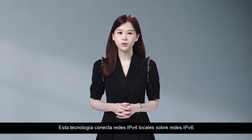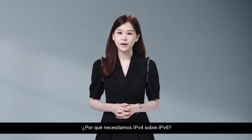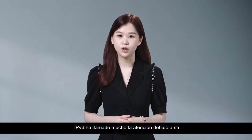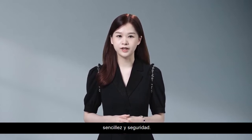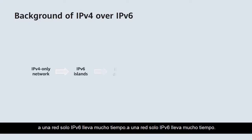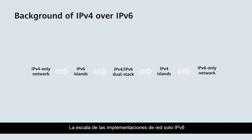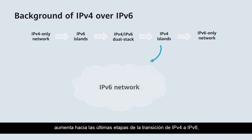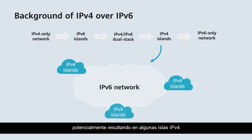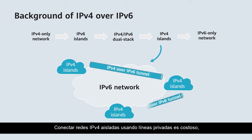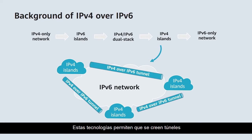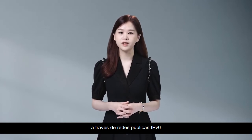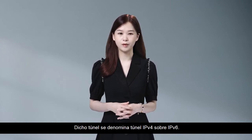This technology connects local IPv4 networks over IPv6 networks. Why do we need IPv4 over IPv6? IPv6 has attracted wide attention because of its huge network address base, simplicity and security. The transition from an IPv4-only network to an IPv6-only network takes a long time. As IPv6-only network deployments scale up in later transition stages, this can result in IPv4 islands — networks isolated from other IPv4 networks by an IPv6 network. Connecting isolated IPv4 networks using private lines is costly, so tunneling technologies are often used. These allow tunnels to be created on IPv6 networks so that isolated IPv4 sites can communicate through IPv6 public networks. Such a tunnel is called an IPv4 over IPv6 tunnel.